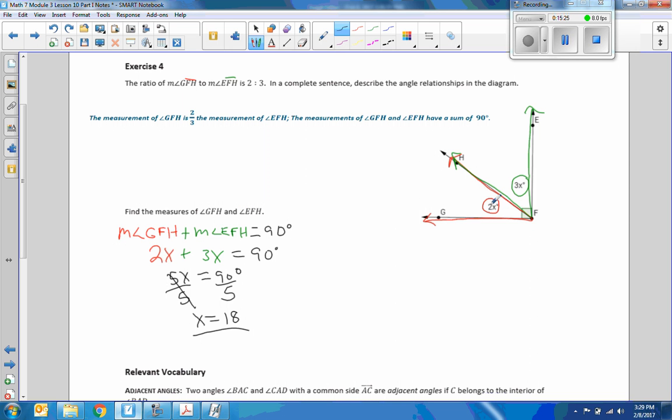So the measure of angle GFH equals 2X. Therefore the measure of angle GFH equals 2 times the X I found, which was 18, and I finally finish up with the measure of angle GFH equals 36 degrees. The measure of angle EFG equals 3X. Therefore the measure of angle EFG equals 3 times my X, which is 18. And the measure of angle EFG equals 54 degrees. 36 plus 54 is indeed 90.